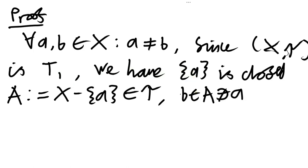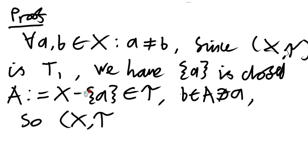So we've proved our result because, given our generic pair of distinct points, we've found an open set that contains one but not the other. And so we have that our space has to be T0. So T1 implies T0.